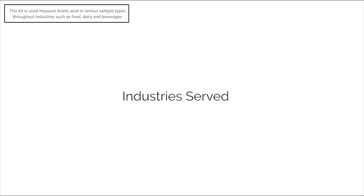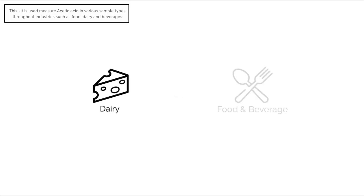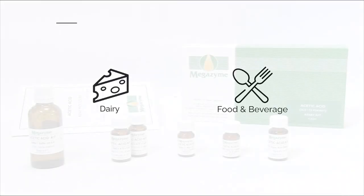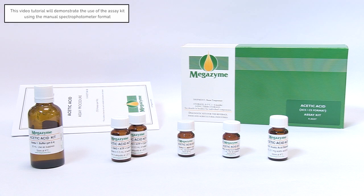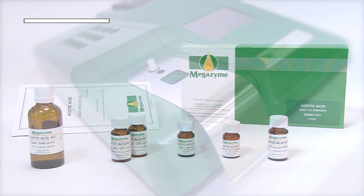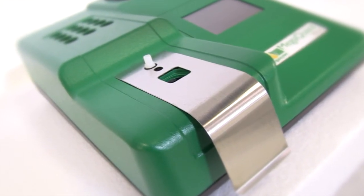The Acetic Acid Assay Kit is a simple method for the rapid and reliable measurement and analysis of acetic acid in foods, beverages, and other materials. This video tutorial will demonstrate the use of the kit with a wine sample using the manual spectrophotometer format.